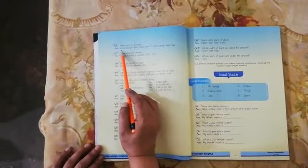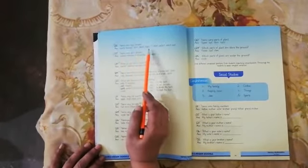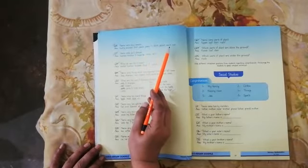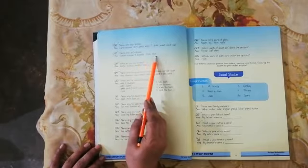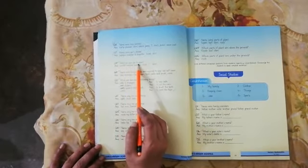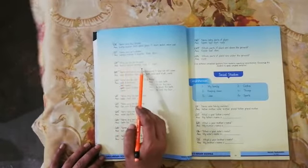Name some boys dresses. Kurta shalwar, shirt, pants, jeans, t-shirt, jacket, waistcoat. Name some girls dresses. Kameez shalwar, dupatta, frock, skirt. What do you like to wear? Boys say kurta shalwar. Girls say frock.